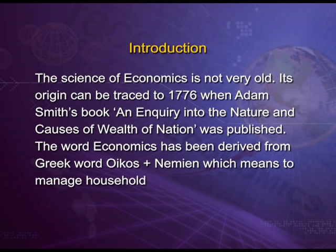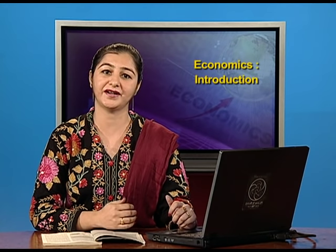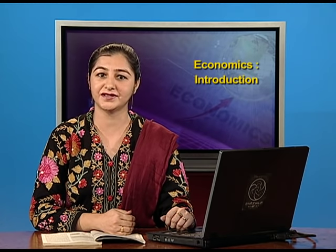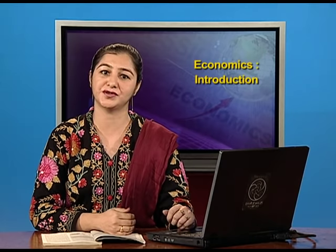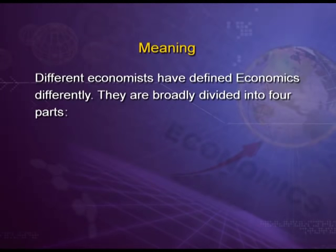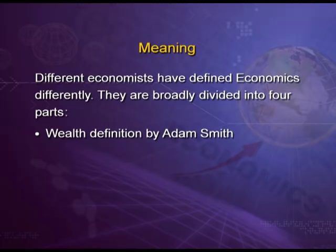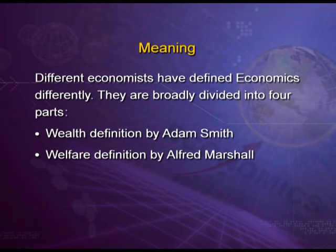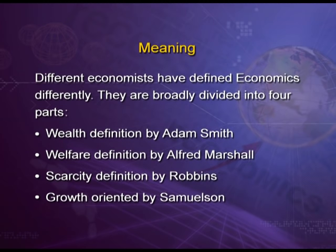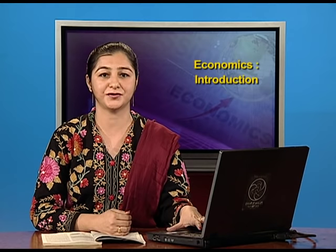Oikos and nemi means 'to manage household.' Initially, economics was understood as a science used to manage households only. Then different economists gave different definitions, broadly divided into four parts: the wealth definition by Adam Smith, the welfare definition by Alfred Marshall, the scarcity definition by Robbins, and the growth-oriented definition by Samuelson.